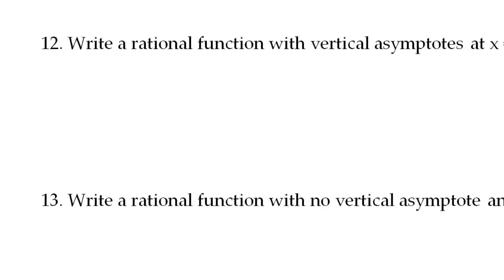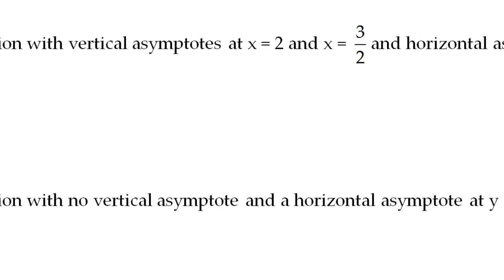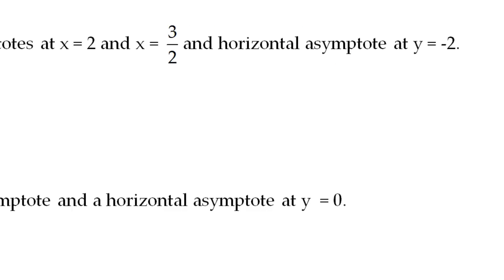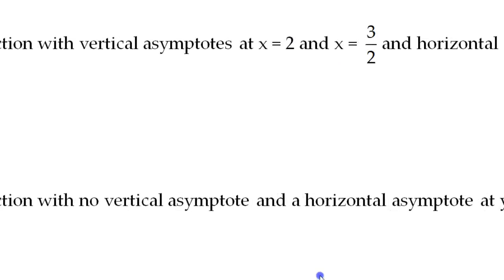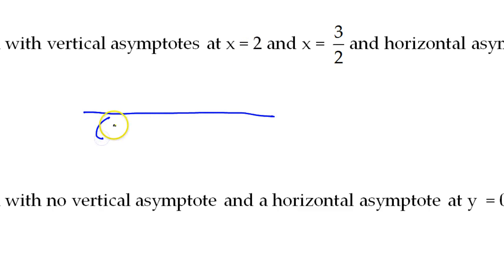Number 12: write a rational function with vertical asymptotes at x equals 2 and x equals 3/2, and a horizontal asymptote at y equals negative 2. First, vertical asymptotes are all about the denominator. To get x equals 2, I need x minus 2 in the denominator.